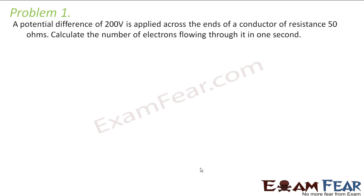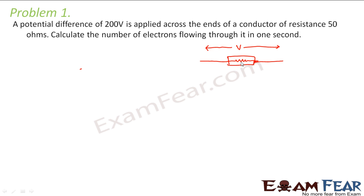The first problem states that a potential difference of 200 volts is applied across the ends of a conductor of resistance 50 ohms. Calculate the number of electrons flowing through it in one second. Let us suppose we have a conductor. A potential difference of 200 volts is applied across this conductor, and it has a resistance of 50 ohms. We have to calculate the number of electrons which will flow through this conductor in one second.